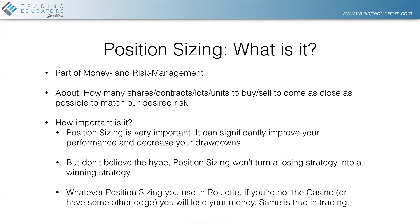Position sizing is part of money and risk management. It's about how many shares, contracts, slots, or units — depending on what you're trading — to buy or sell to come as close as possible to matching our desired risk. So if we've decided we want to risk 1% per trade, how many units do we have to buy to come close to that risk, considering the trade we're going to put on?